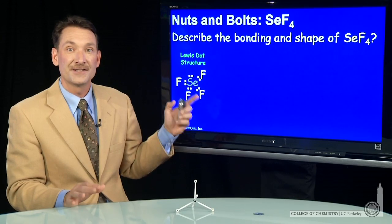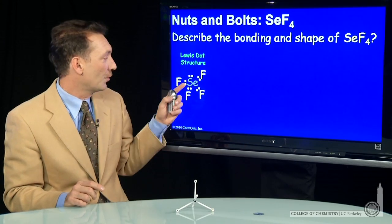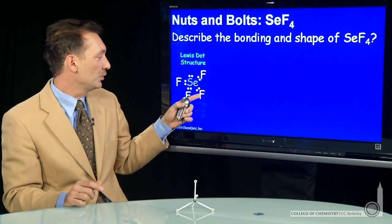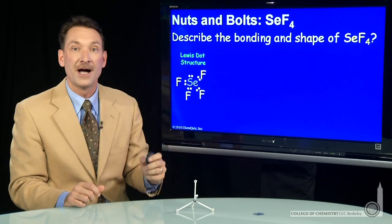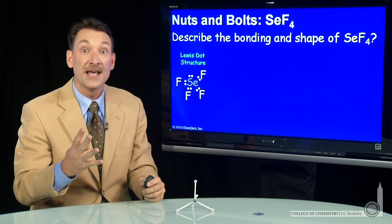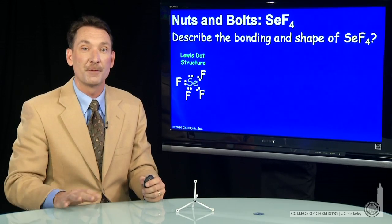And what we really need is the steric number around selenium. So that steric number is 1, 2, 3, 4, 5. I have to accommodate four fluorines and a lone pair for steric number 5.